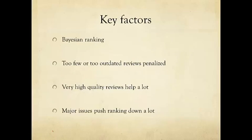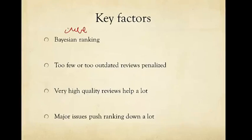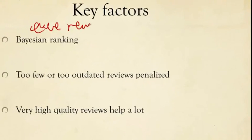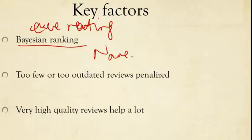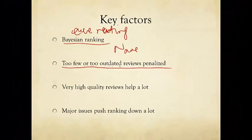So in summary, the key factors we believe behind Amazon ranking includes, of course, the naive average review score, rating score. But also the following factors. Includes Bayesian ranking, probably using the formula Bayesian ranking where n is picked as n average. It includes the penalty on too few or too outdated reviews depending on the product category. One year could be too outdated.